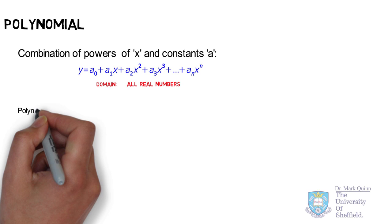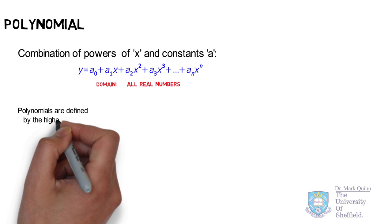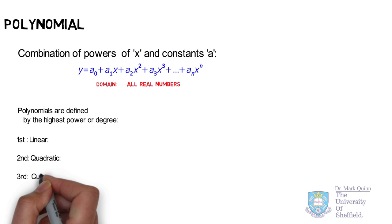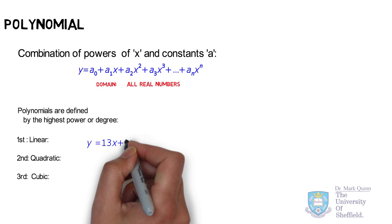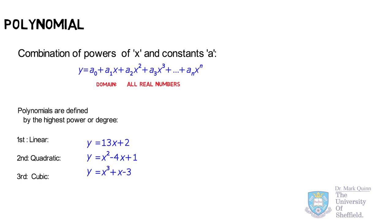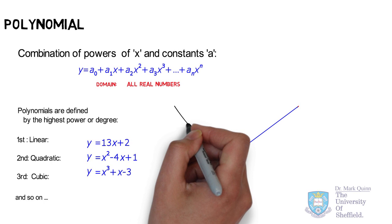Polynomials are also defined by the highest power of x, or degree. For x to the power of 1, we would refer to it as a first degree, or linear. A second degree would be referred to as a quadratic, a third degree a cubic, and so on. For example, a linear function equals 13x plus 2, where 2 is the y-intercept and 13 is the gradient. x² minus 4x plus 2 is a simple quadratic, and x³ plus x minus 3 is a simple cubic.